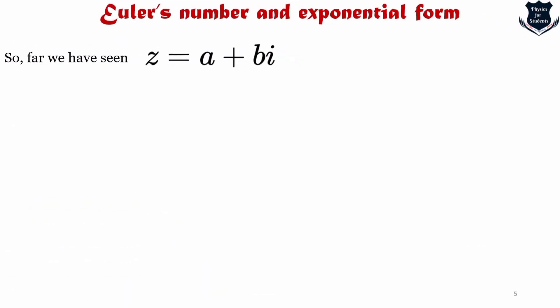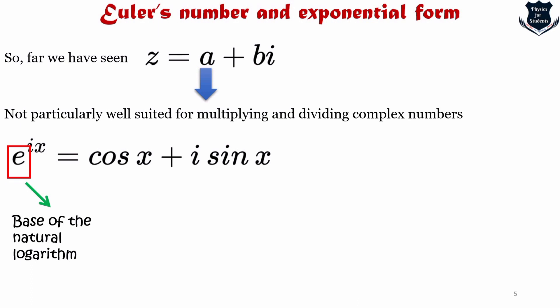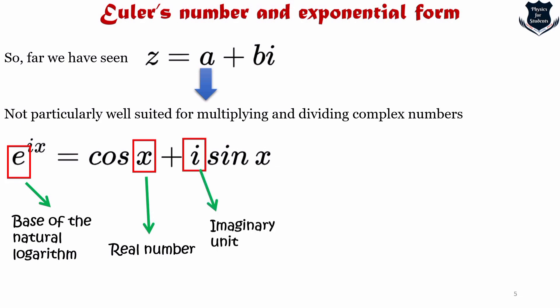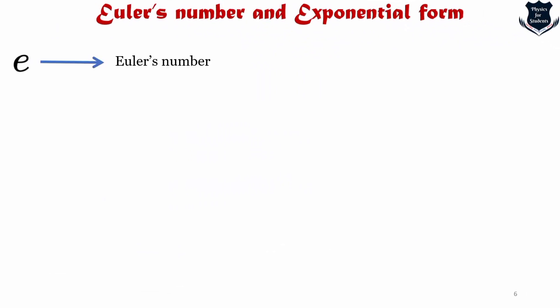So, Euler's number and its exponential form. So far we have seen that z equals to a plus bi. In some ways it is not well suited for multiplying and dividing complex numbers, so we use e raised to the power ix. This is the base of the natural logarithm and we have e^(ix) = cos(x) + i·sin(x), where x is a real number and i is the imaginary unit. This equation establishes the fundamental relationship between trigonometric functions and exponential functions, geometrically bridging two representations of the same unit complex number in the complex plane.